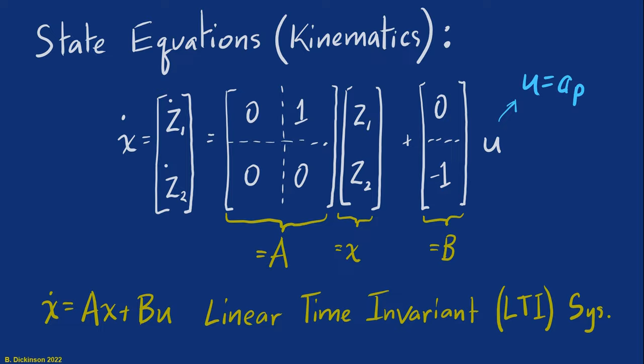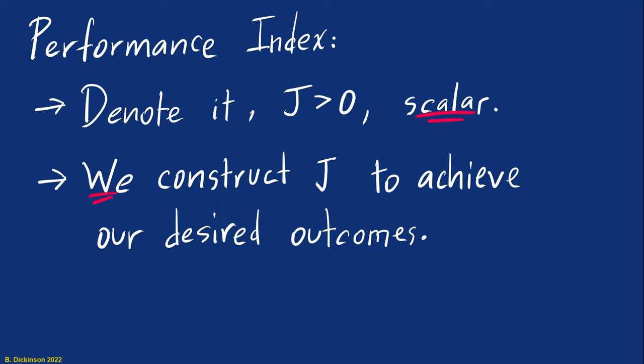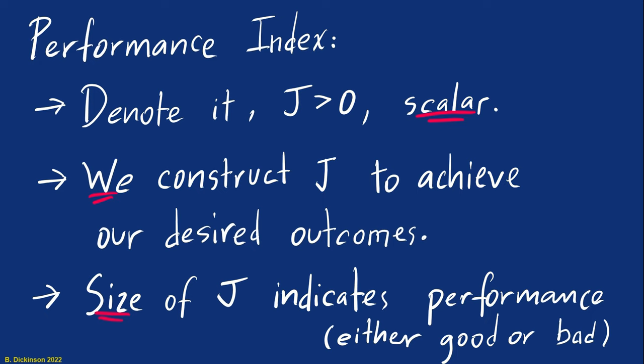Now onto the performance index. We're going to denote it J. We're going to require that J be positive definite, and then it be a scalar. I want to note also that we construct J to achieve what we want out of the guidance problem or out of the engagement. And it's important that as we construct J, the size of J have a well-defined relationship with the performance of how we're doing. For example, if J continues to increase, then there should be a monotonic relationship with J increasing and the engagement doing better or J increasing and the engagement doing worse.